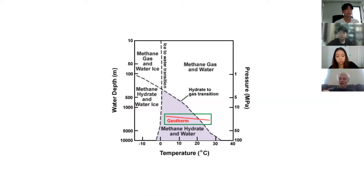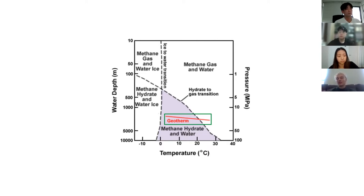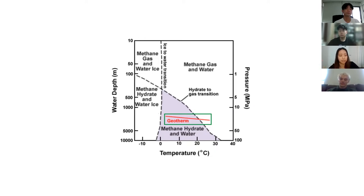As you can see by this phase diagram that Sabrina's kindly put up on the screen, the section where you have methane hydrate and water ice is a very small portion of the phase diagram. If you look at the geotherm line, that shows the Earth's temperature based on the depth you're traveling to. These conditions are very unstable when you bring methane hydrate back up to the surface, so that's a technological challenge — how are we going to keep methane hydrate stable and return it to the surface for use as a fuel?